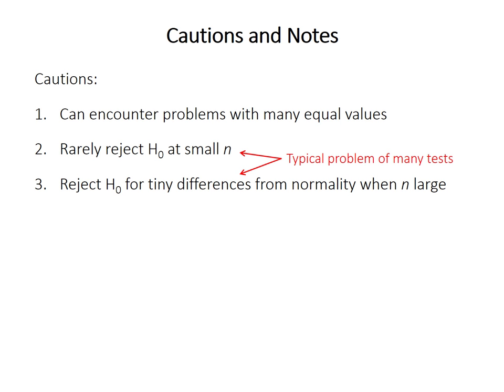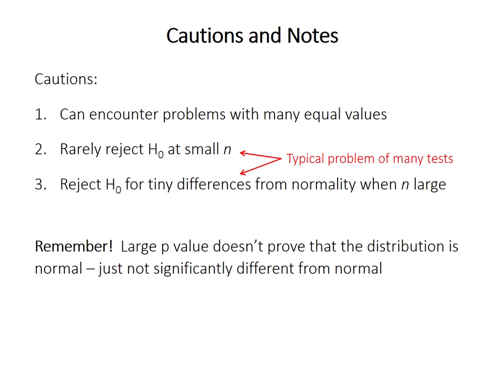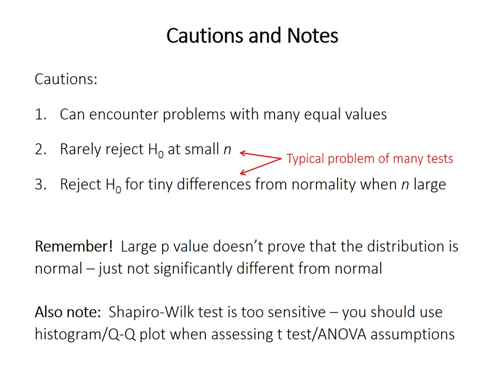Also, remember that a large p-value — p greater than 0.05 — only means that you are unable to reject the null hypothesis. It doesn't prove that the distribution is normal. Technically, with this type of statistical testing, you can never prove that you have a normal distribution, just that it's not significantly different from normal. You also shouldn't use the Shapiro-Wilk test to assess normality for a t-test — it is far too sensitive for that purpose. Many data sets that fail the Shapiro-Wilk test are perfectly fine for a t-test or ANOVA. Use histograms or QQ plots instead.